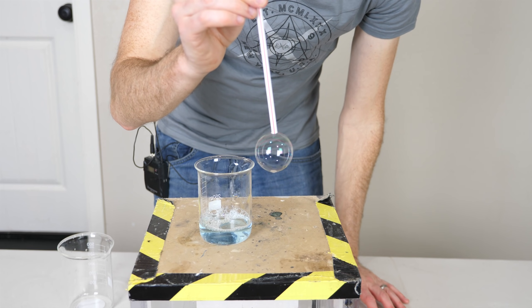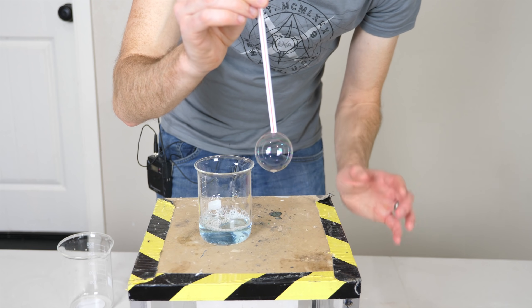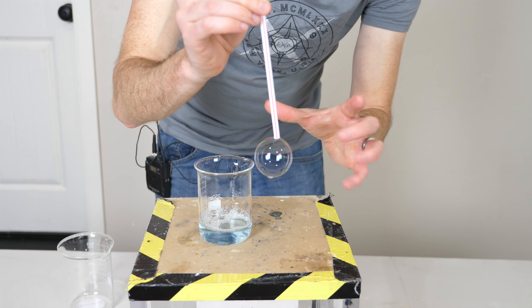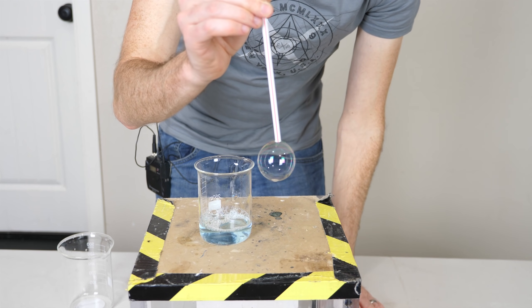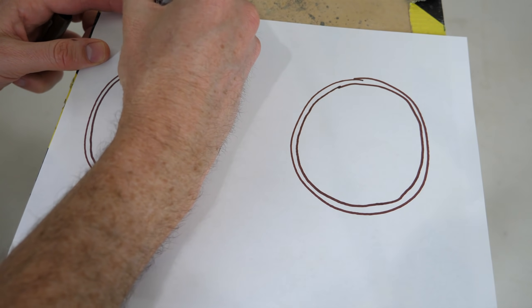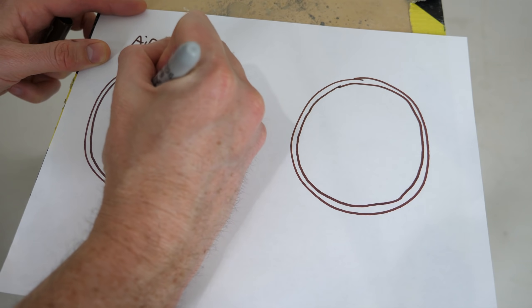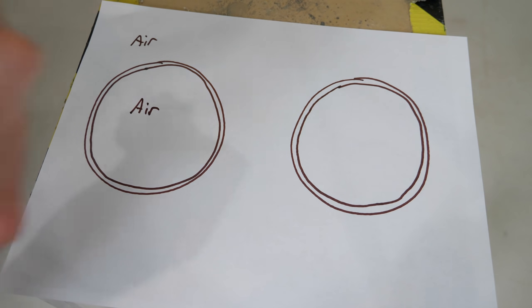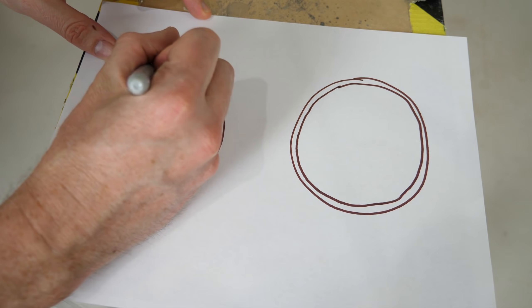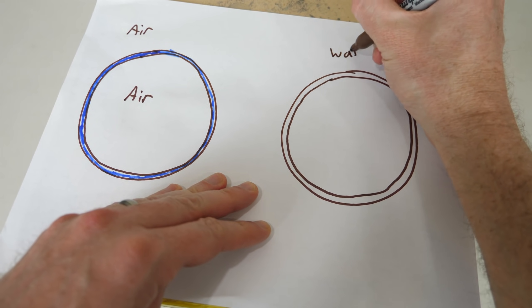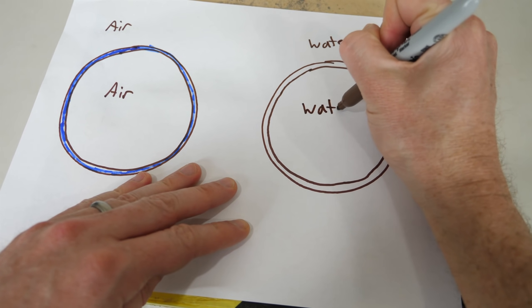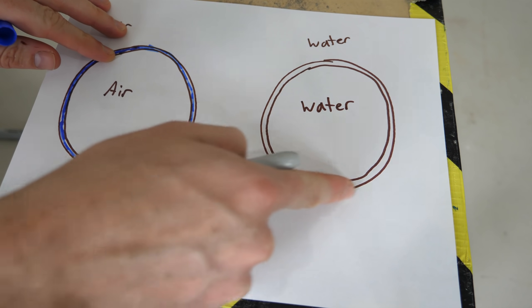So what would an anti-bubble be? Well, an anti-bubble would mean that there's water on the outside, a thin membrane of air, and then there's water on the inside. So a normal bubble has air on the outside, air on the inside, and a thin layer of soapy water. But an anti-bubble has water on the outside, water on the inside, and then a thin layer of air.